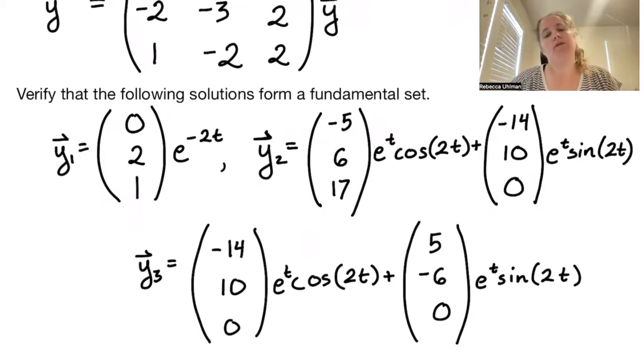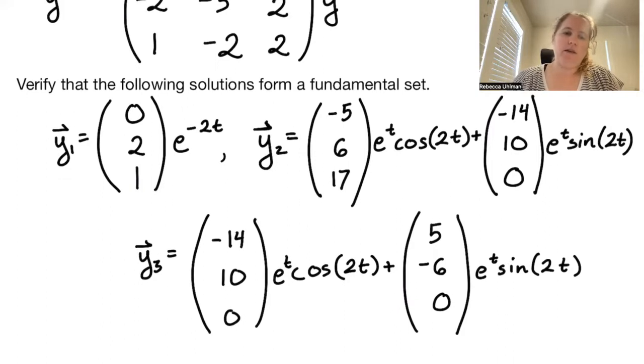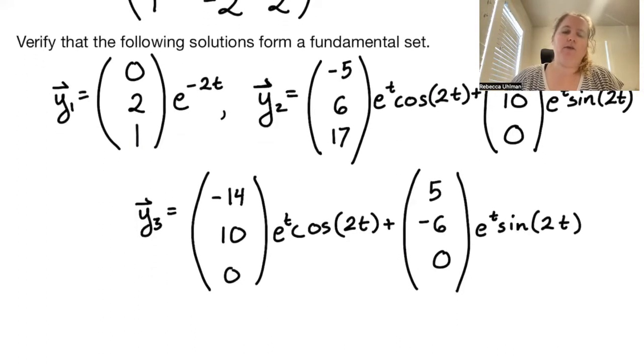Y2 is the vector negative 5, 6, 17, times e to the t cosine of 2t, plus the vector negative 14, 10, 0, times e to the t sine of 2t. Y3 is the vector negative 14, 10, 0, times e to the t cosine of 2t, plus the vector 5, negative 6, 0, times e to the t sine of 2t.